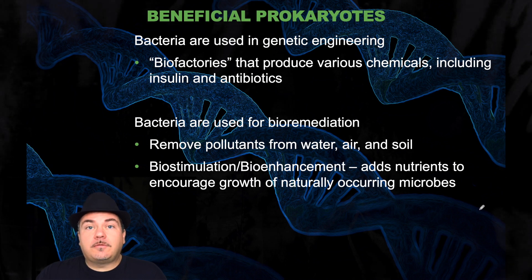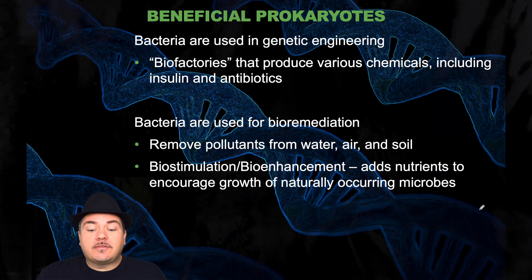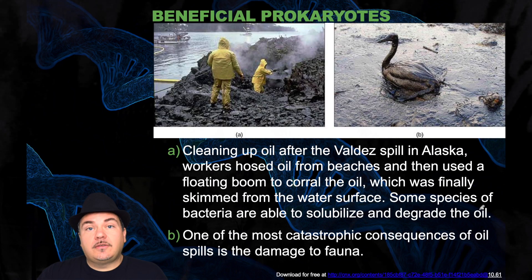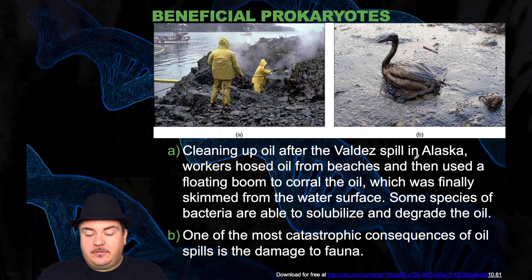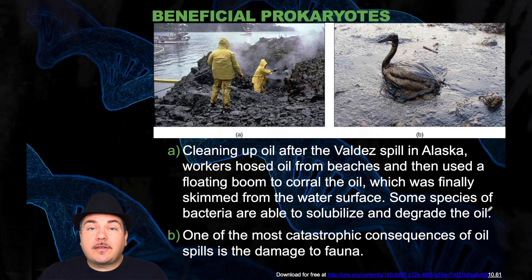We also have bacteria used in genetic engineering. We use bacteria as little factories — or biofactories — that produce various chemicals. For example, some humans need to take insulin as an injection; we have bacteria make the human insulin protein for us. Bacteria are also used in bioremediation, to remove pollutants from water, air, and soil. During the cleanup of the Exxon Valdez oil spill in Alaska, workers hosed oil from beaches and used a floating boom to corral the oil, which was skimmed from the water's surface. Then certain bacteria species were able to solubilize and degrade the oil.